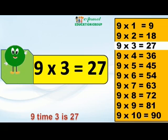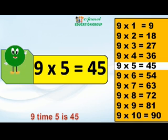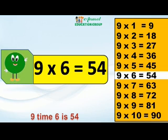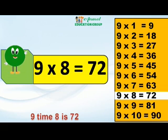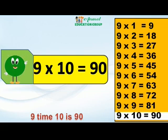9 times 3 is 27. 9 times 4 is 36. 9 times 5 is 45. 9 times 6 is 54. 9 times 7 is 63. 9 times 8 is 72. 9 times 9 is 81. 9 times 10 is 90.